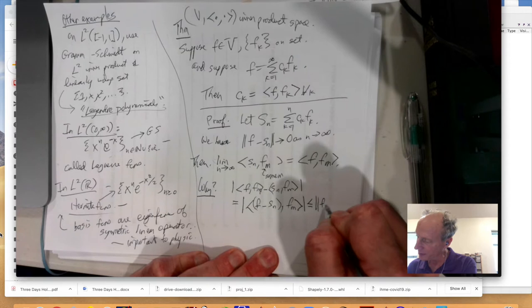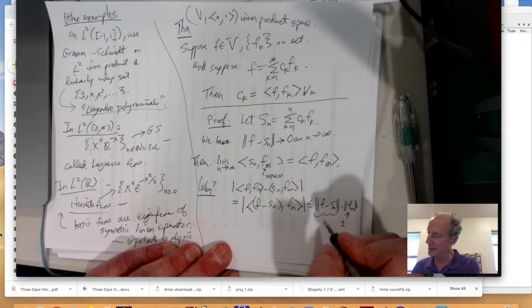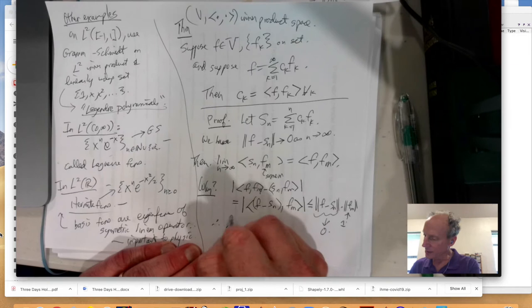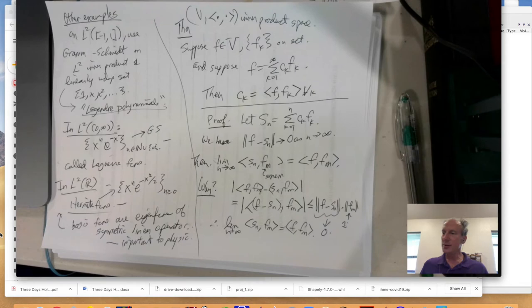It's the Cauchy-Schwartz inequality. Excellent. So, it's less than or equal to the norm of inner product norm of this times the inner product norm of FM. But that's 1 because it's an orthonormal sequence. And that is right there goes to 0. So, therefore, the limit as N goes to infinity of SN, FM equals F FM. Great.